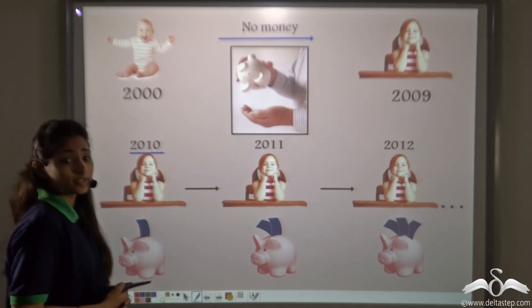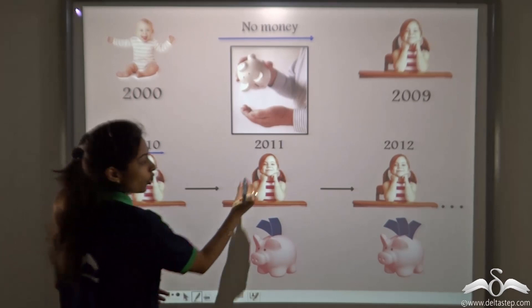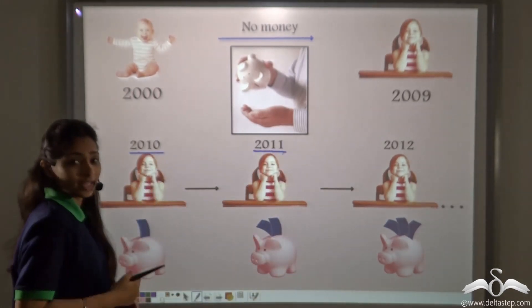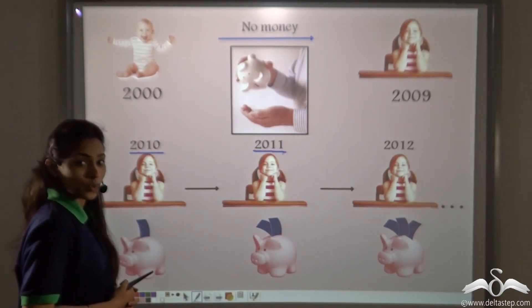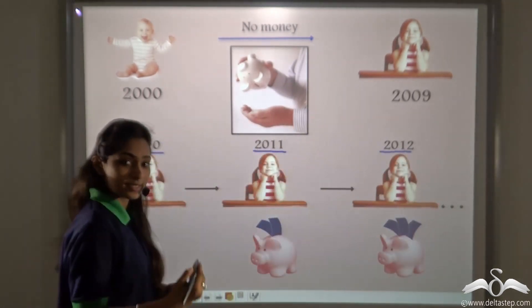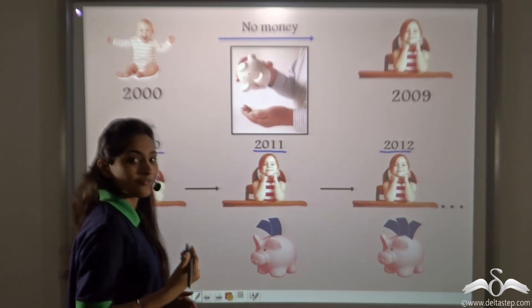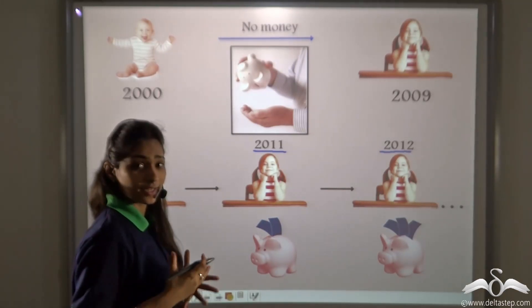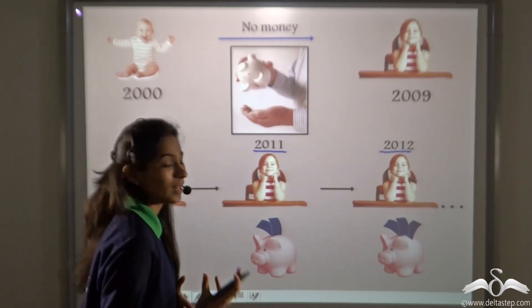Then in the next year, say 2011, you got 200 as pocket money, and then in the next year 2012 you got 300 as pocket money, and then it started increasing by 100 every year. Can you plot this data on a graph paper? Well let's see.